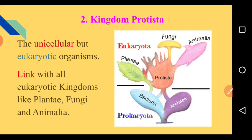This is Kingdom Protista and its position in classification. The general character of Kingdom Protista is that all organisms included in Protista are unicellular but eukaryotic. They are unicellular and eukaryotic, meaning they have a proper, well-defined nucleus.